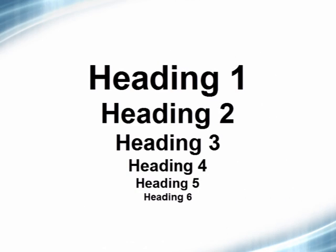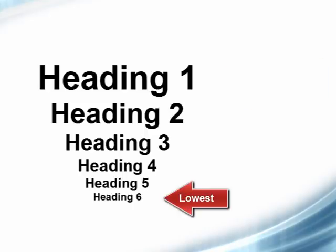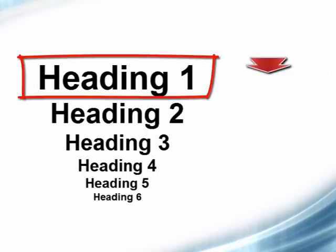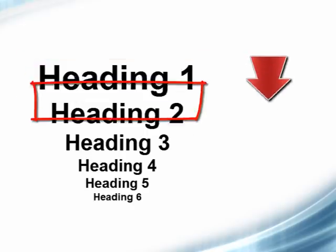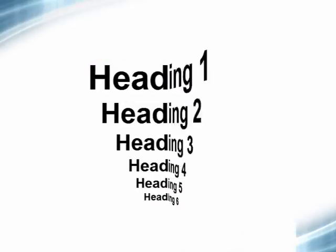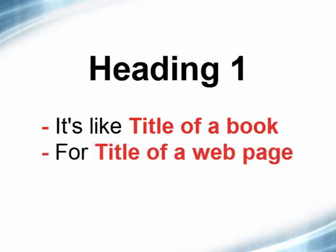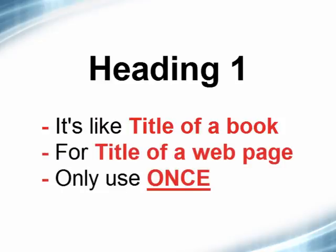There are six levels of headings, Heading 1 through 6. Heading 1 represents the highest level and 6 represents the lowest. It is important to use headings in the proper descending order. Heading 1 is like the title of a book, so you will use Heading 1 for the title of the web page and it is only used once.